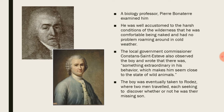Bonaterre made the first clinical observations of Victor and classified him as a new hominin species called Juvenis averionensis. In one observation, he removed Victor's clothing and led him outside into the snow, but instead of being upset, Victor was frolicking — he was happy to be outside in the cold weather. From this, Bonaterre concluded that Victor was well accustomed to the harsh conditions of the wilderness, comfortable being naked, and had no problem roaming around in cold weather.